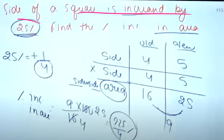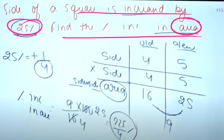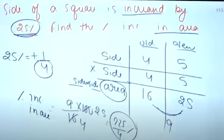The side of a square is increased by 25%. To represent this, the old side is 4 and the new side is 5, since 25% increase of 4 is 1, giving us 5.